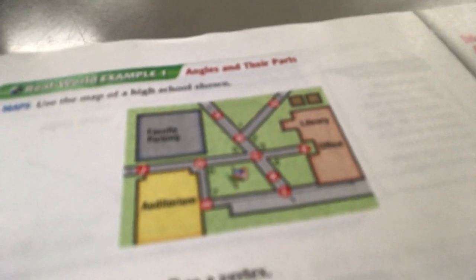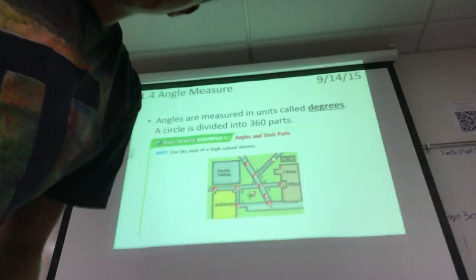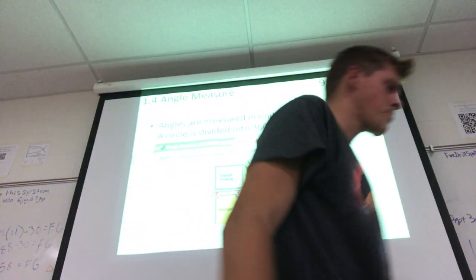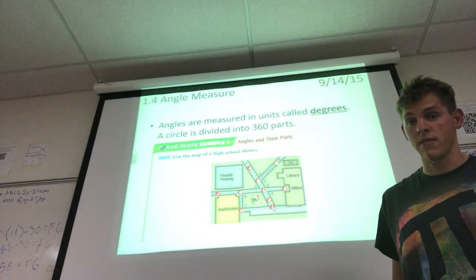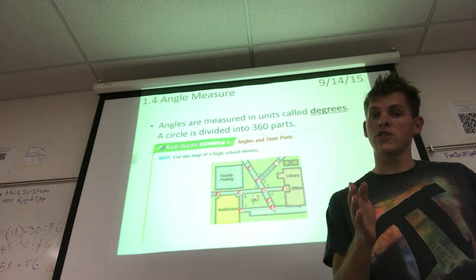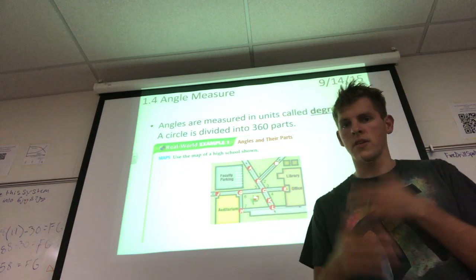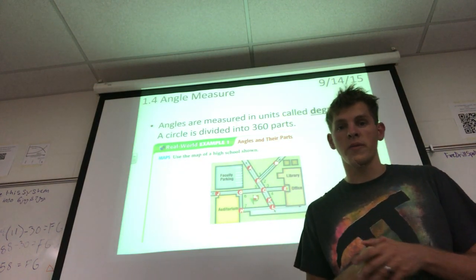Fourth question: name a point in the interior of DBK. The only thing I see in the interior that's not on the angle is point E. Go through those, make sure that you're able to come to those same conclusions. Put comments or have questions ready for me tomorrow.